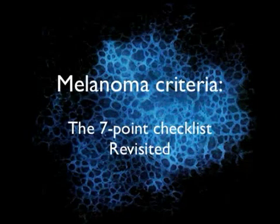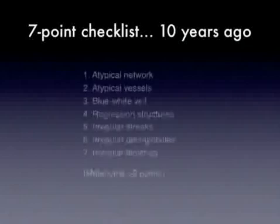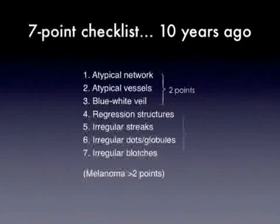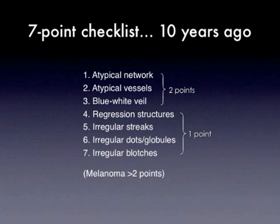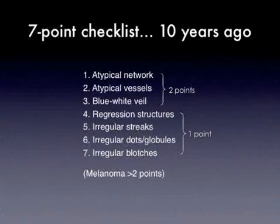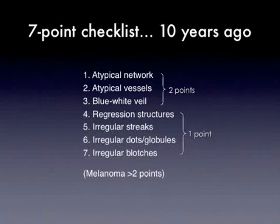Melanoma is characterized by one or more of the features summarized by the seven-point checklist. This is a semi-quantitative method developed more than ten years ago in which seven criteria are recognized. Three criteria were considered more specific for the diagnosis of melanoma and a score of two was given to each of them. Four were considered minor features because of their lower odds ratio and a score of one was attributed to each of them. For a melanoma to be diagnosed, a total score of three or more was considered necessary to obtain maximum sensitivity with a reasonable specificity.